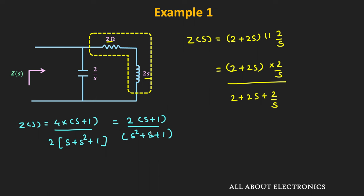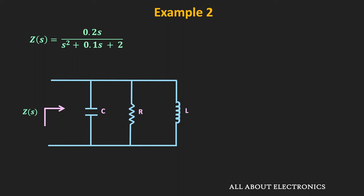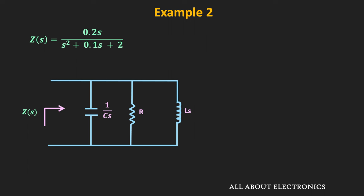Similarly, let us take another example. Here we have been given the driving point impedance of a network and we are asked to find the component values of the given parallel RLC circuit. Since the driving point impedance is given in the S-domain, let us first find the equivalent S-domain representation. For the capacitor it is 1/Cs, for the inductor it is Ls, and for the resistor it stays as is. In this circuit, all elements are connected in parallel, so it is easier to find the admittance of the network.